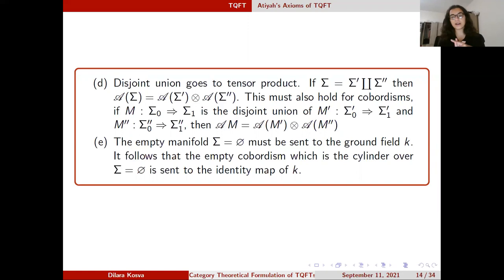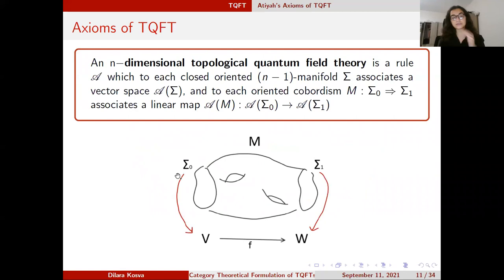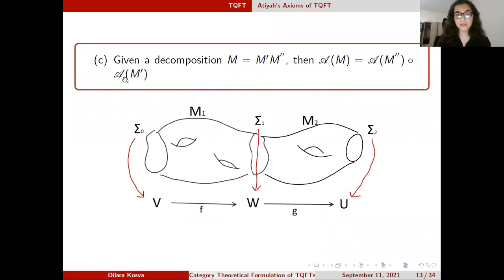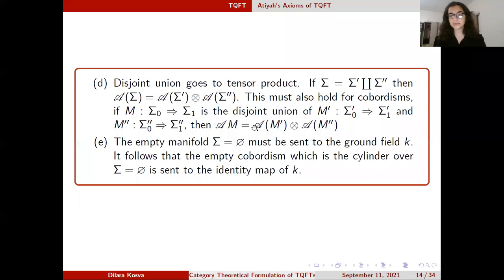We also want disjoint union to go to tensor product. Let me go back to the physical intuition. These (n−1)-manifolds can be thought of as space, and the manifold M in between can be thought of as space-time. We map these spaces to state spaces — vector spaces — and space-time to the linear time-evolution operator between the state spaces. Individual systems have individual vector spaces whose tensor product represents the combined system. This mathematical importance will be clear when we talk about categorification. Also, the empty manifold must be sent to the ground field — this will be clear when we discuss monoidal categories.